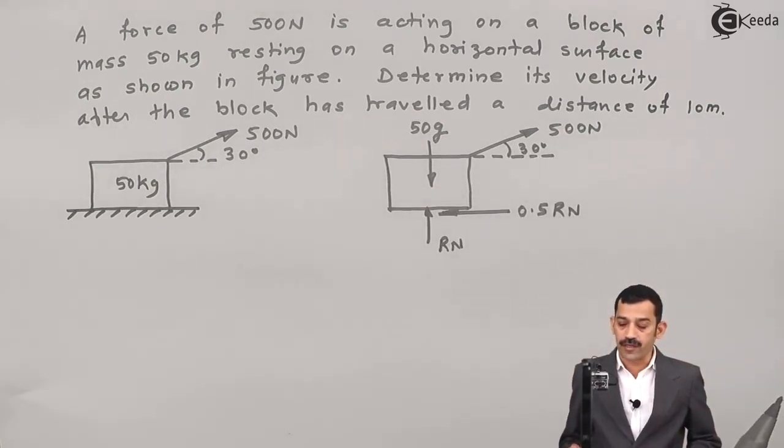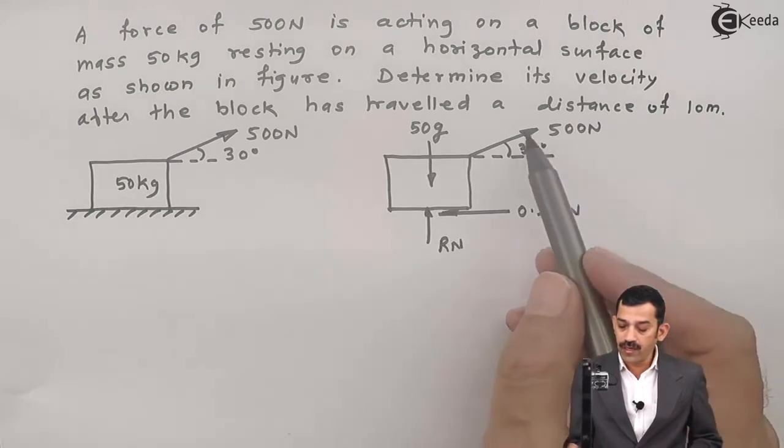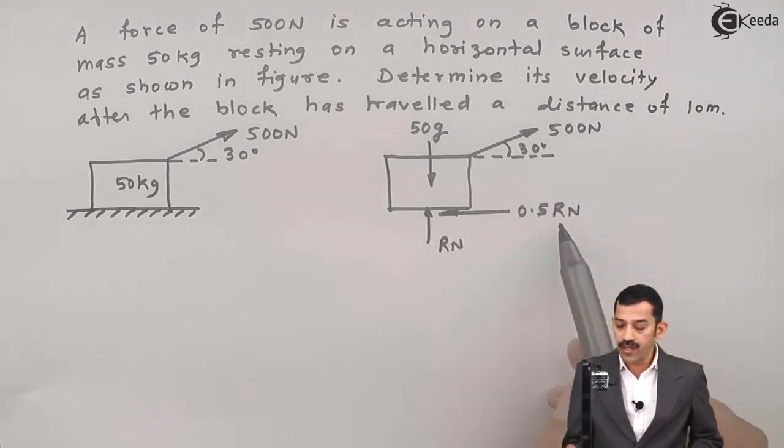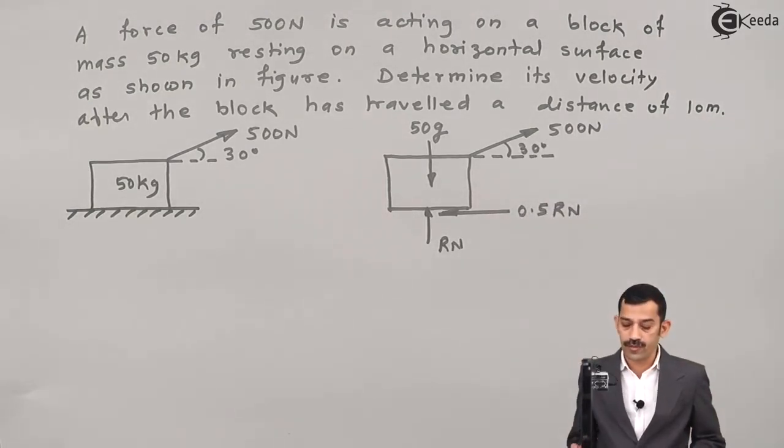Now to find out velocity of this block when block has traveled a distance of 10 meters, work is done by 500 cos 30 and work is done by frictional force.